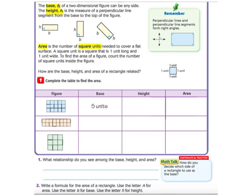So we're going to find the area of a figure. The area means inside part. Perimeter is around the outside edges. Area is everything in the middle of the shape. Okay, so here's some information that we need to know in order to do this correctly. The base, B, of a two-dimensional figure can be any side. The height, H, is the measure of a perpendicular line segment from the base to the top of the figure.